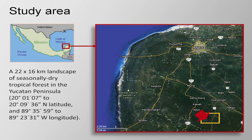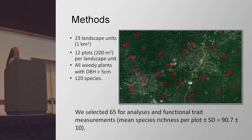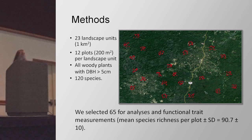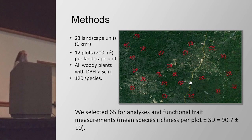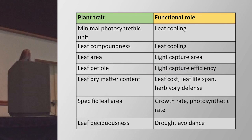The study area was in the Yucatan Peninsula. Lucia did most of this work in a 22 by 16 kilometer landscape — you can see it in the square shown here — and used 23 landscape units, each of which had 12 plots of 200 square meters. You can see the 12 plots as the little red dots across the 23 landscape units in this aerial photograph. All woody plants with DBH greater than 5 centimeters were tallied, and there were a total of 120 species across 275 plots. Of these species, 65 were selected for analysis and for functional trait measurements.